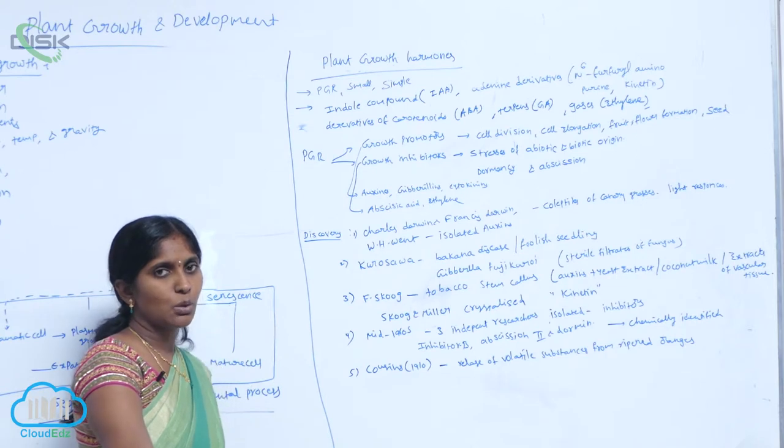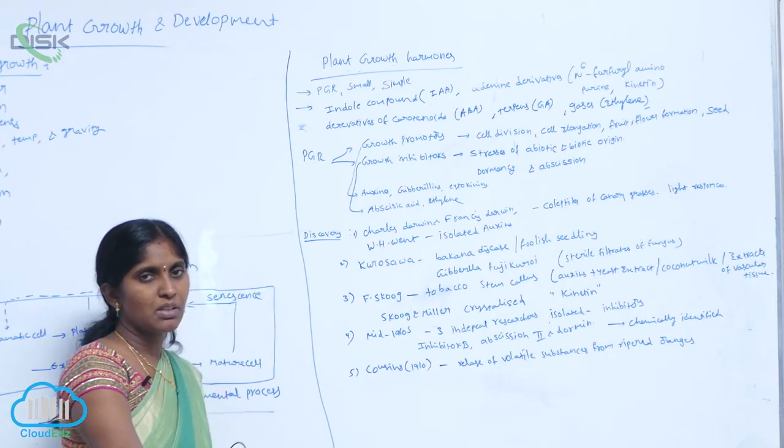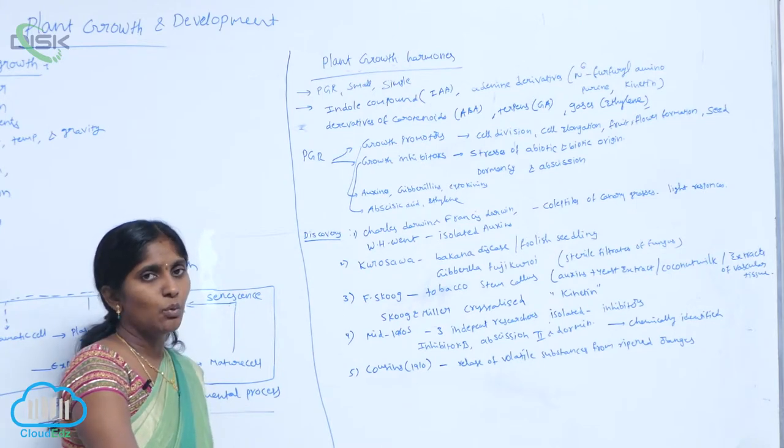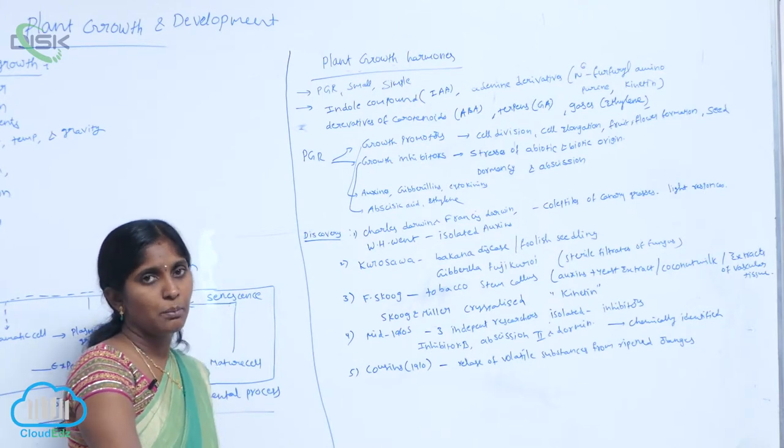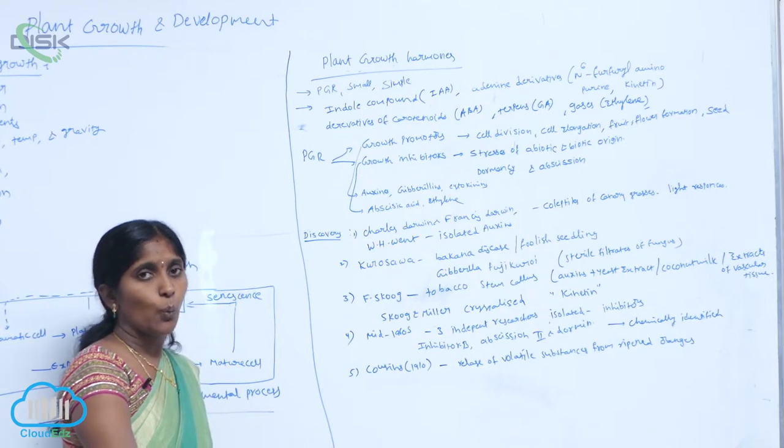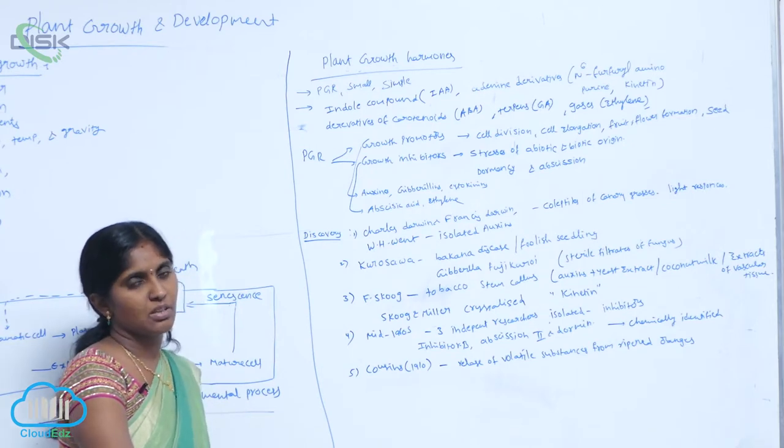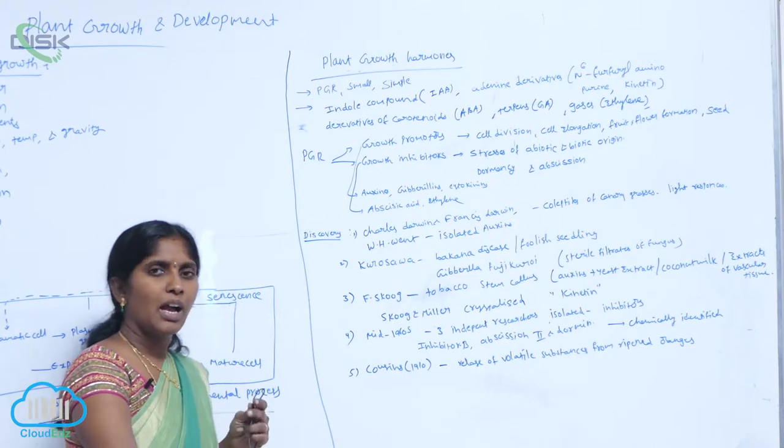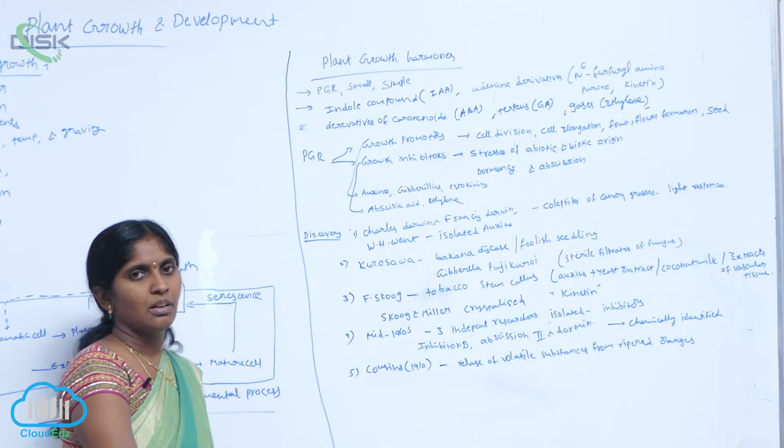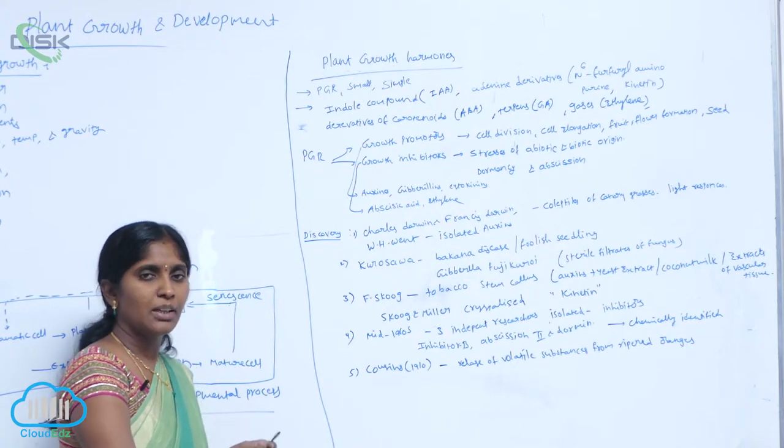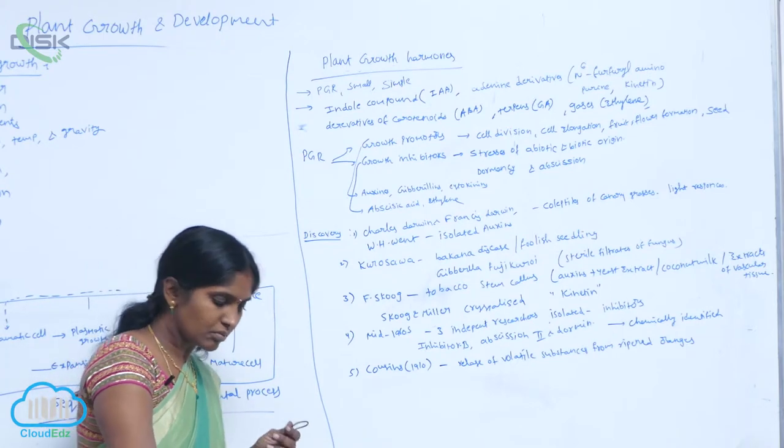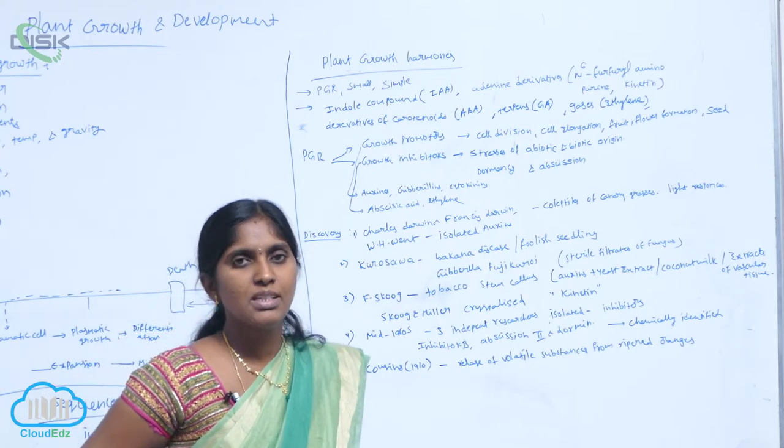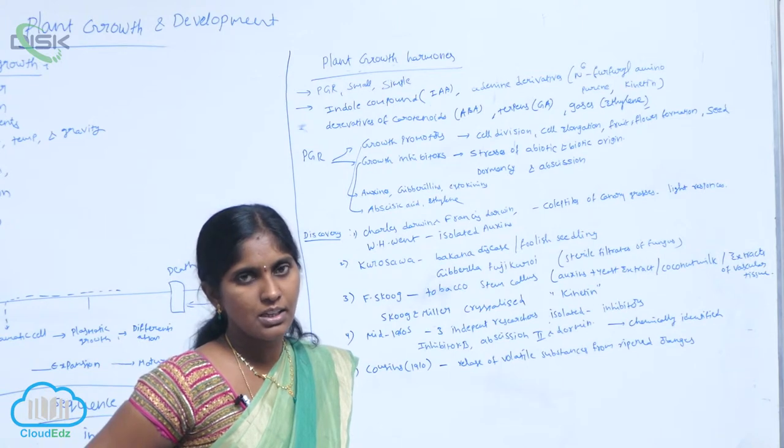The closure of stomata depends on the concentration of the ABA. In what condition is ABA released? When the plant gets stress: lack of water, pathogenic effect, high temperature, humidity, environmental stress. Under that condition, the ABA is released.